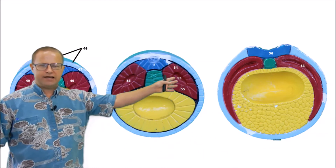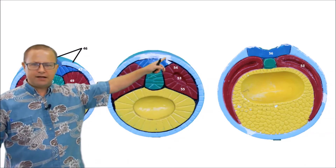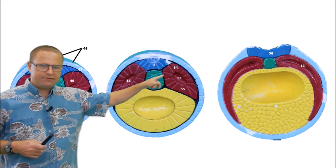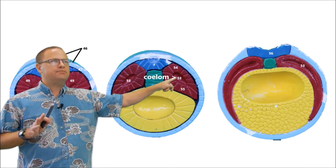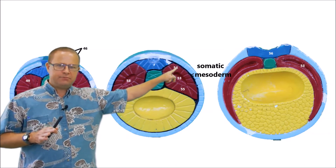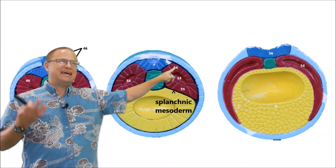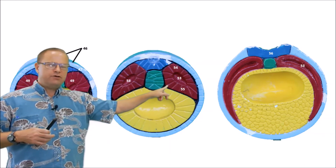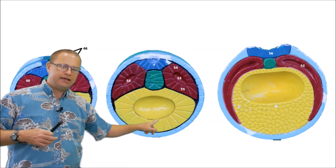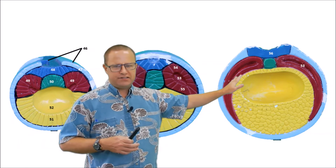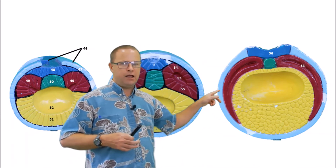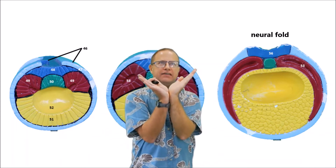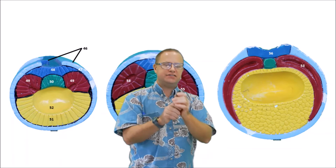Moving to a slightly later embryo: up top we can see the neural plate, and on the sides we can see our mesoderm. The mesoderm now has a cavity in it called the coelom, and this coelom helps divide the mesoderm into two different regions: somatic mesoderm and splanchnic mesoderm. Somatic mesoderm goes on to form the connective tissues underneath the surface of the skin and in the limbs. Splanchnic mesoderm goes on to form the mesoderm underneath the endothelium in the GI organs. A little further along, that neural plate is forming into a neural fold or neural groove, which will eventually form a tube through the process of neurulation.